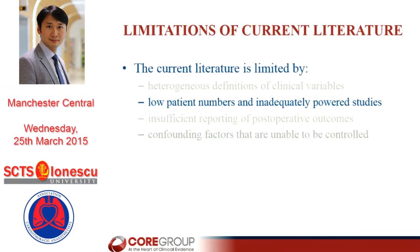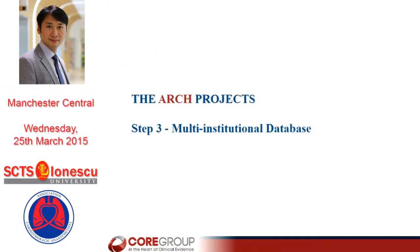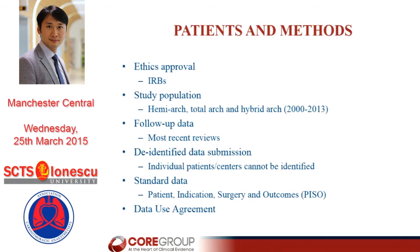To address the low patient number situation in inadequately powered studies — most studies were talking about hundreds of patients, at most 400 to 500 cases for arch patients — it was quite logical to aggregate all the centres together to form a multi-institutional database. This requires institutional review board approval from individual centres. We're talking about patients with hemi-arches, total arches, and hybrid arch cases. We required consecutive patients, not just cherry-picked ones, and asked surgeons to provide information related to patient indication, surgical techniques, and outcomes. The study design and rationale is published in the European Journal.